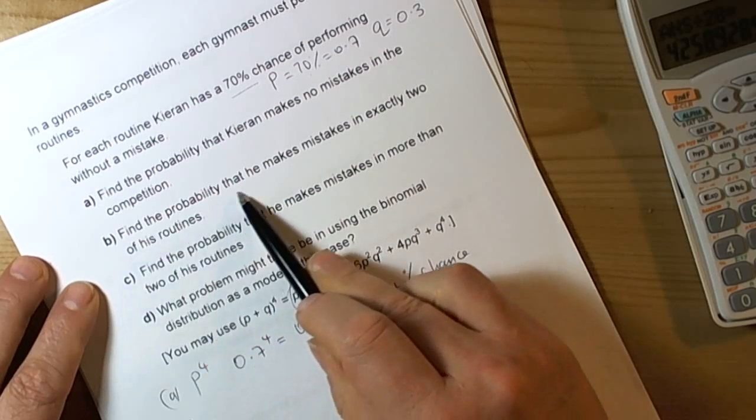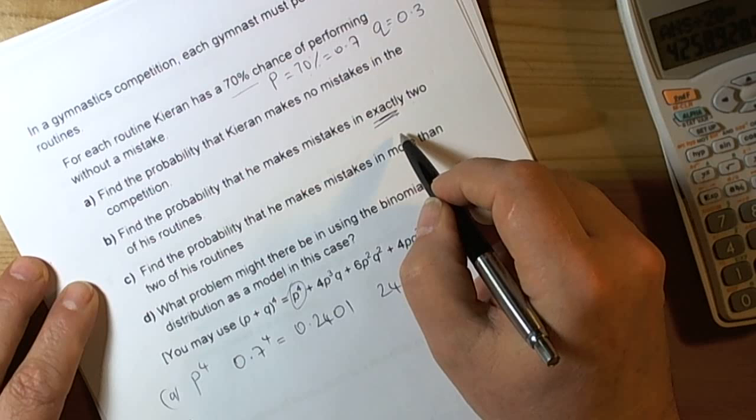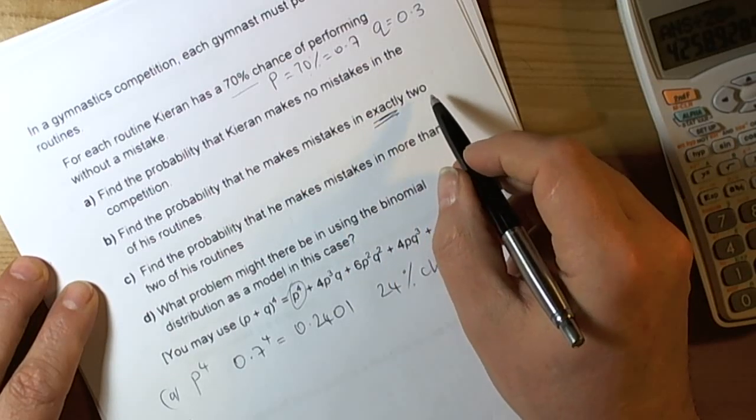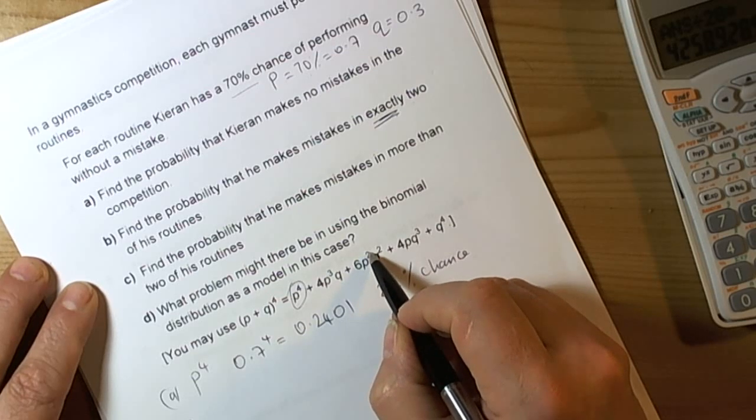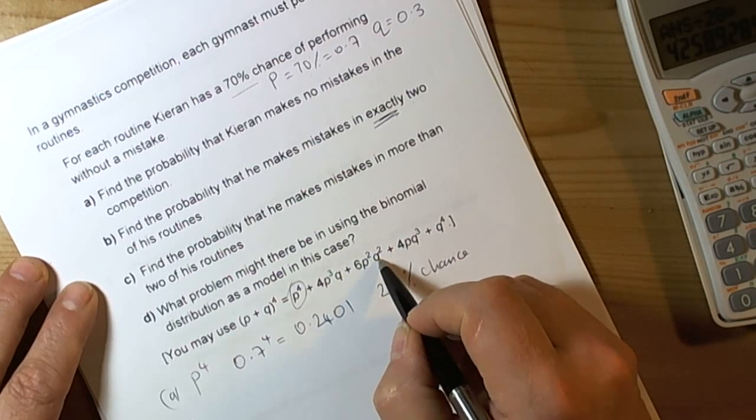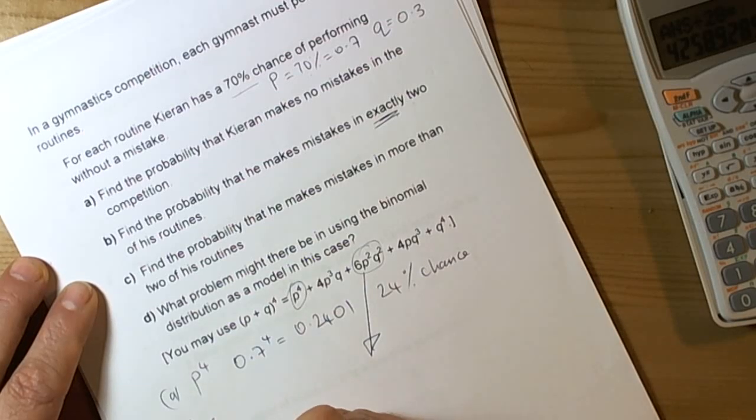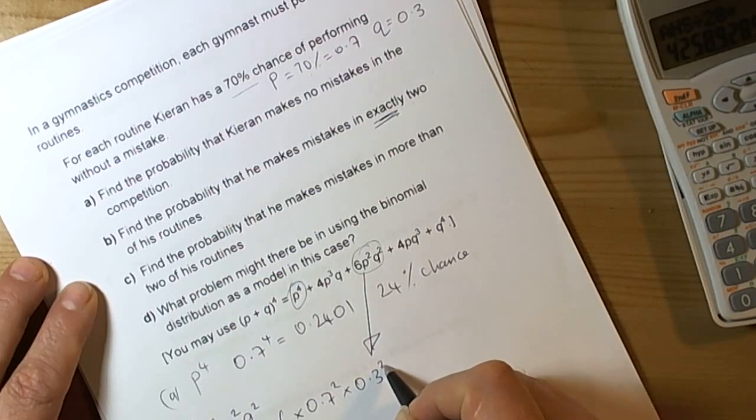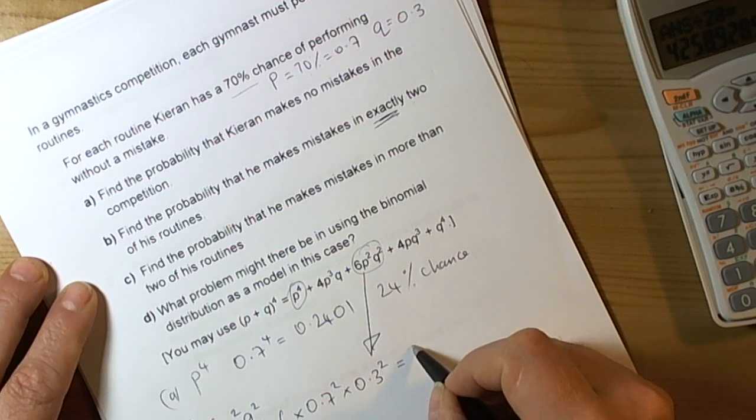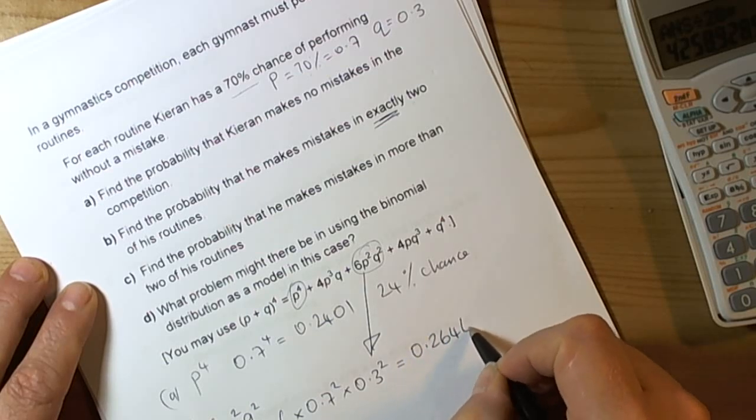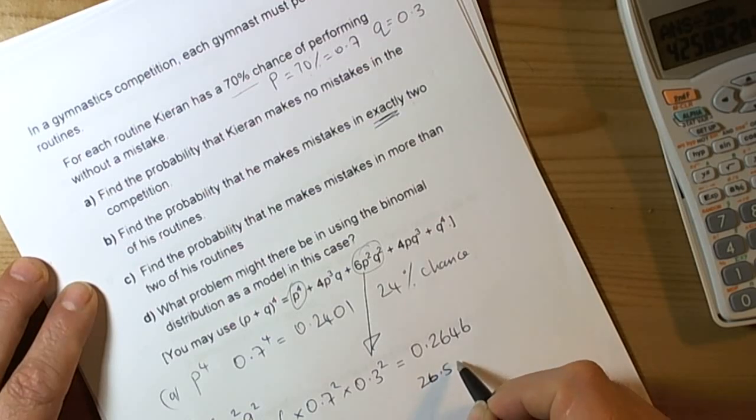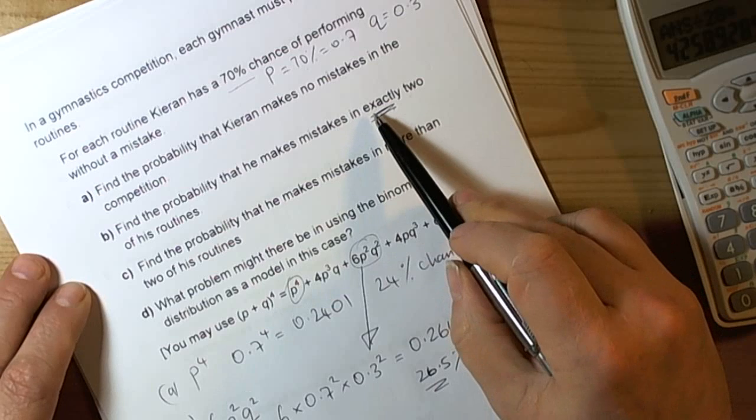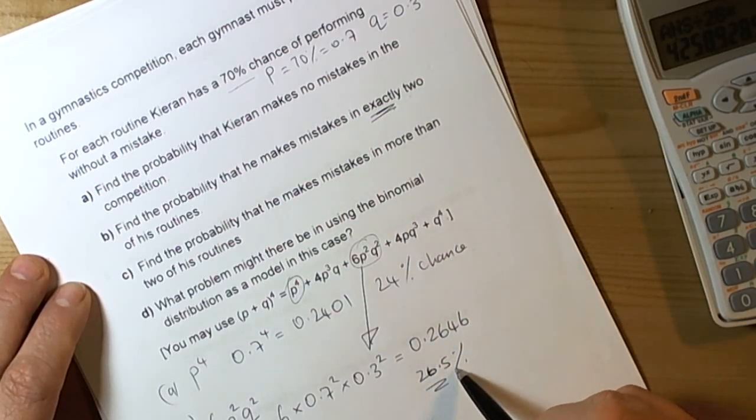Part B: find the probability that he makes mistakes in exactly two. So we want exactly two of his routines to have mistakes and two to have no mistakes. We're looking for p squared (the two events with no mistakes) and q squared (two events with mistakes). We're using this term. So we've got 6p squared q squared, so that's 6 times 0.7 squared times 0.3 squared. When we work that out, we end up with 0.2646. In terms of interpretation, that's roughly a 26.5% chance that he will make mistakes in exactly two of his routines.